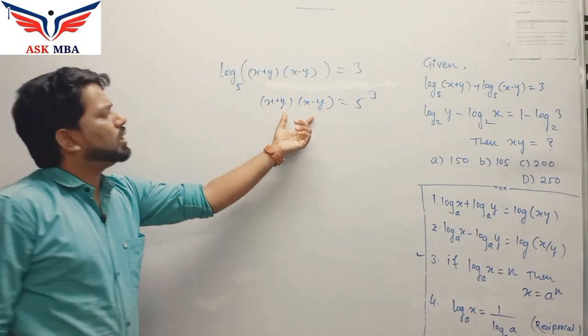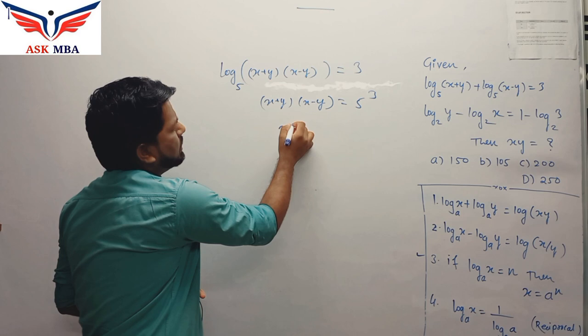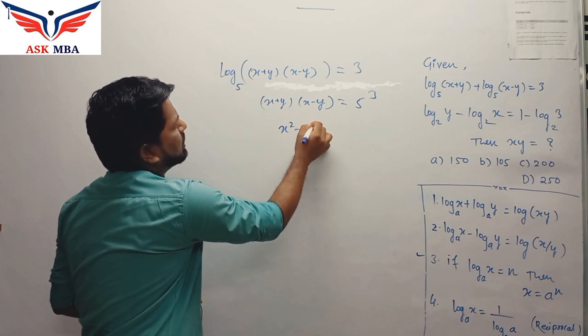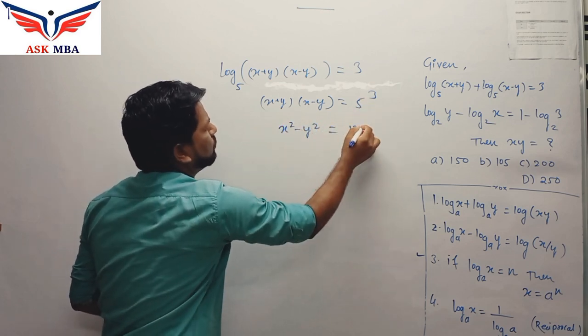After looking at these two terms, you can see this is nothing but x squared minus y squared is equal to 5 cubed, 125.